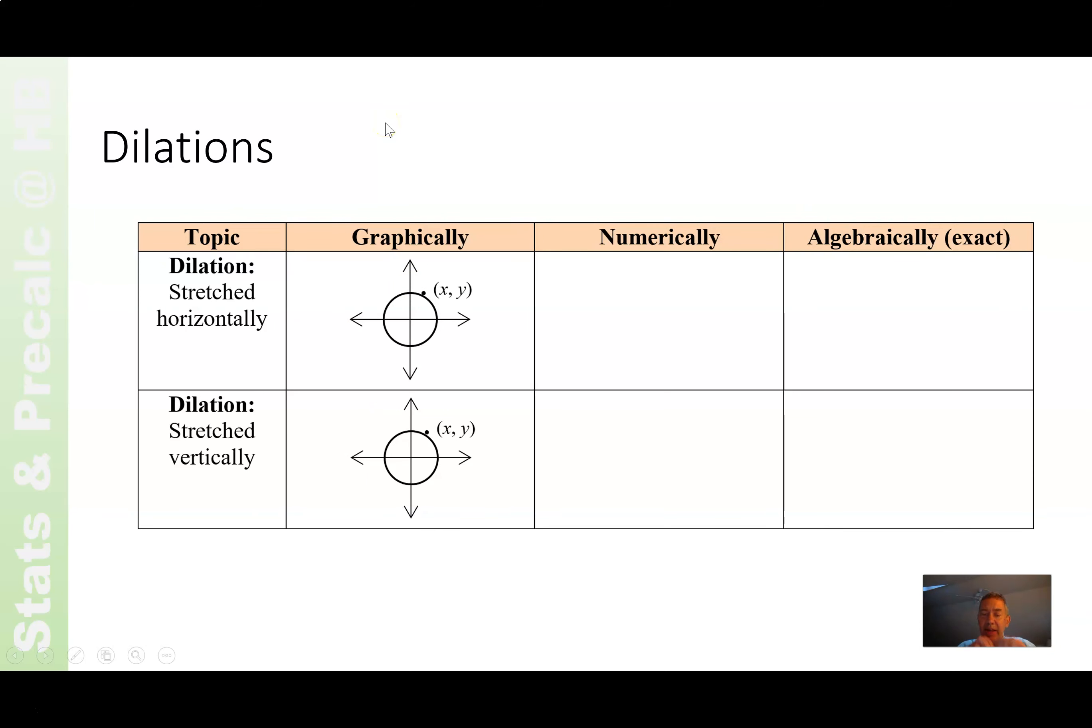Dilations. Dilations are stretches, multiplications. You're multiplying all the coordinates. So in the first case, if you're stretching it horizontally, the y coordinates stay the same, and the x's get multiplied. In this case, it's a little hard to see just because of the graphics, but the x coordinates stretch and the y coordinates stay the same. And numerically, you're multiplying the x coordinates. We call it b. Algebraically, that means in the equation, you're replacing x with x divided by b. Good.